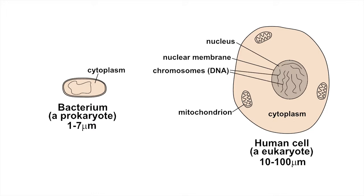In a eukaryotic cell, genetic information in the form of DNA is contained in a number of chromosomes in the nucleus. But in a typical bacterial cell, there's just one double-stranded loop of DNA floating around in the cell's cytoplasm.